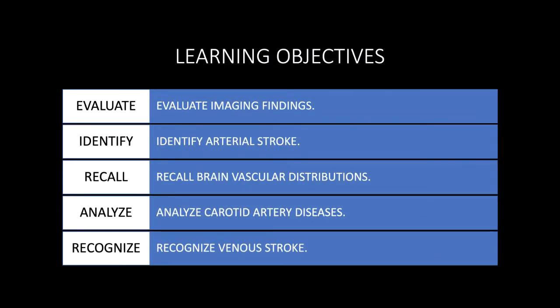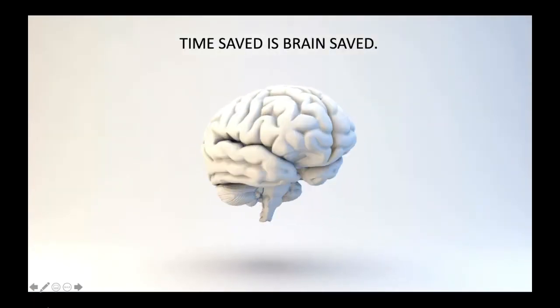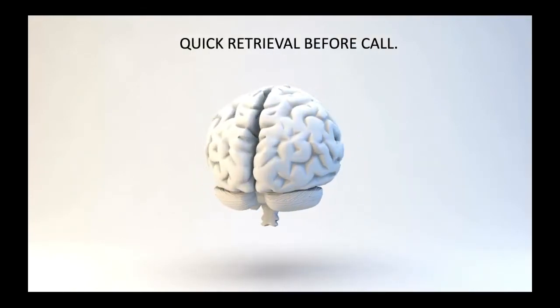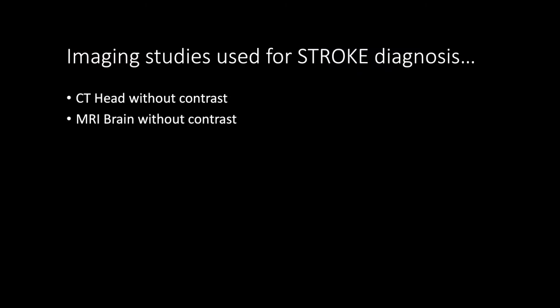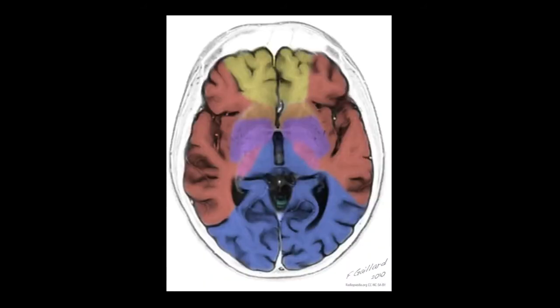The learning objectives are to evaluate imaging findings, identify arterial stroke, recall brain vascular distributions, analyze carotid artery diseases, and recognize venous stroke. The mantra of stroke imaging and treatment is: time saved is brain saved. Before we take call, let's do a quick retrieval. The imaging studies include CT head without contrast, MRI of the brain without contrast, CT angiogram of the head and neck, MRI angiogram of the head and neck, and CT perfusion.